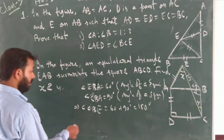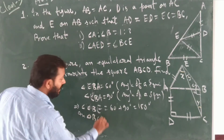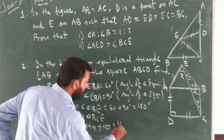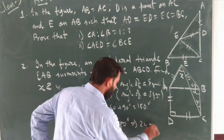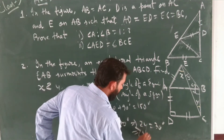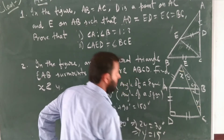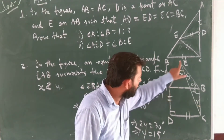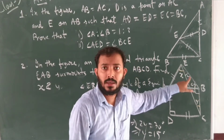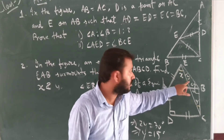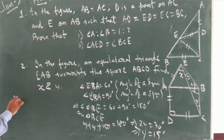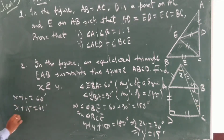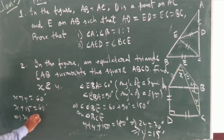Now, returning to triangle BCE: Y plus Y plus 150 equals 180, giving 2Y equals 30 degrees, so Y equals 15 degrees. After getting Y equals 15 degrees, we know that angle AEB equals 60 degrees — angle of the equilateral triangle. That means X plus Y equals 60 degrees, and since Y equals 15 degrees, this gives us X equals 45 degrees.